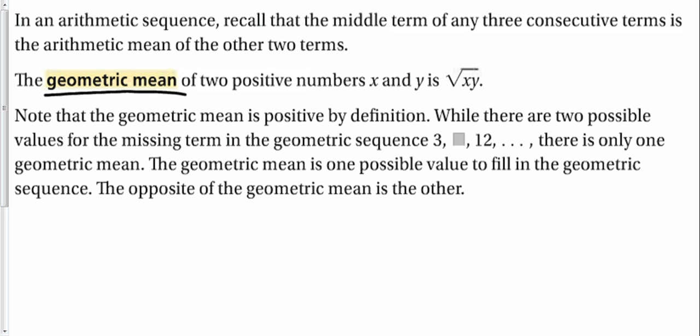The geometric mean. The arithmetic mean, if you remember, I'm going to put it at the bottom, was x plus y over 2. Well, the geometric mean gets a little more complicated, but not really. The geometric mean is the square root of x times y. So, when we have two positive numbers, we multiply them together and take the square root, and we can find the middle number.